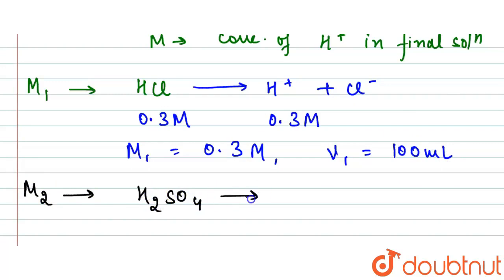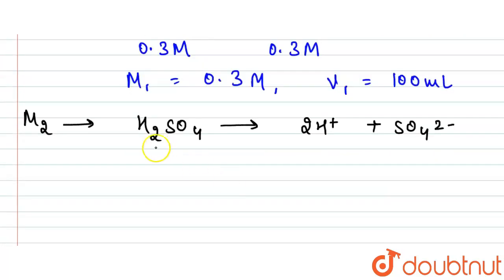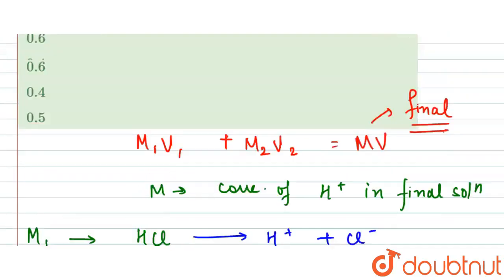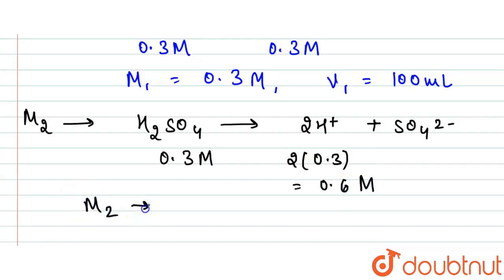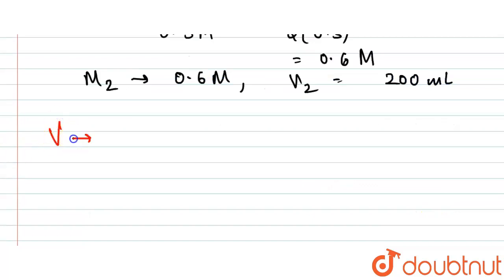For M₂, we have H₂SO₄, which ionizes as: H₂SO₄ → 2H⁺ + SO₄²⁻. Since H₂SO₄ is 0.3 molar, the H⁺ concentration is 2 × 0.3 = 0.6 molar. So M₂ = 0.6 M and V₂ = 200 ml.